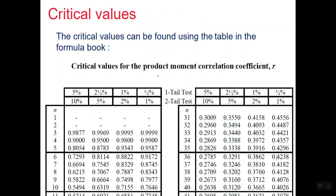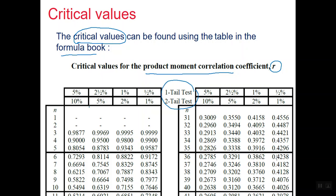The other thing you need to conduct a hypothesis test is a critical value, and these are given to you in the formula booklet. Be careful to look at the right table — there is also one for Spearman's, so make sure it says product moment correlation coefficient and has r. You need to know whether you are doing a two-tailed or one-tailed test, the significance level, and the sample size n — then read across to the appropriate row.